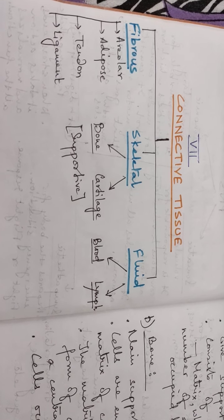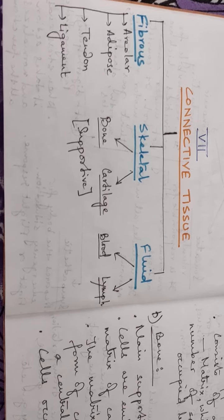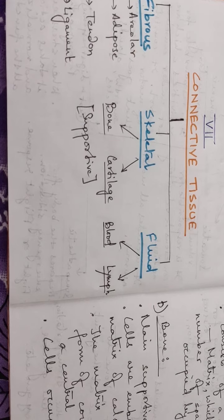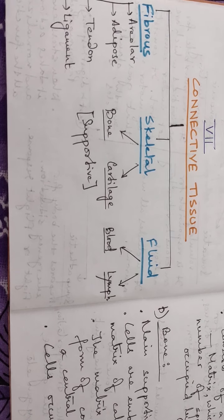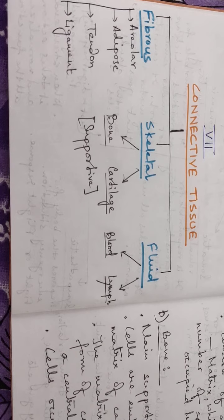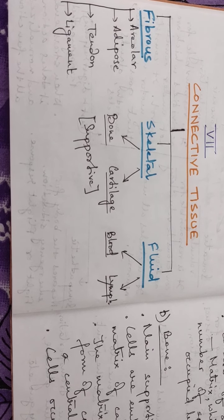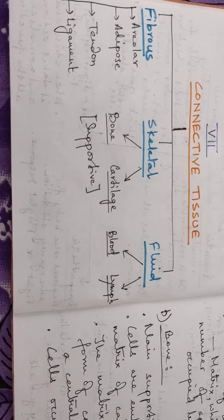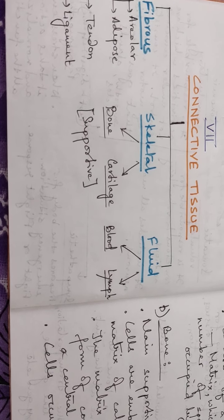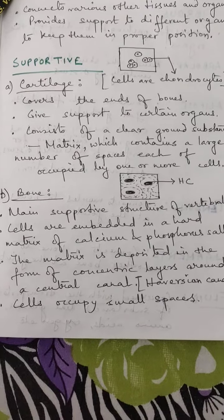Hello class 7. Last day we went through the two important animal tissues — epithelial and muscular. Today I am starting with the third type, that is connective tissue. Connective tissue has got three main divisions: fibrous, skeletal (we also call it supportive), and fluid. They have again some subdivisions: fibrous are of four types — areolar, adipose, tendon, and ligament; supportive are of two types — bone and cartilage; and fluid are of two types — blood and lymph.